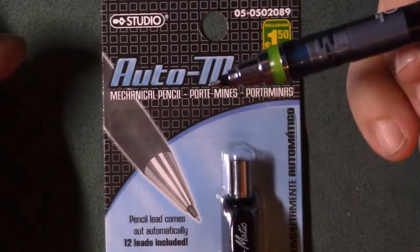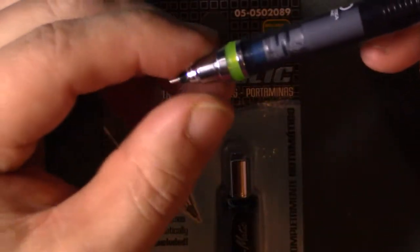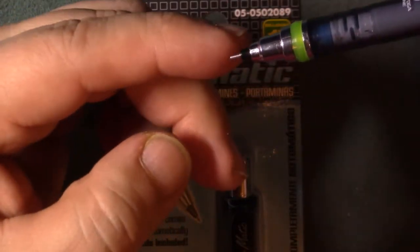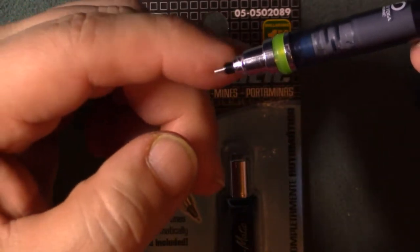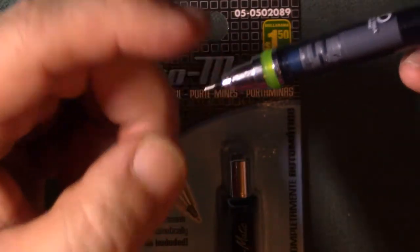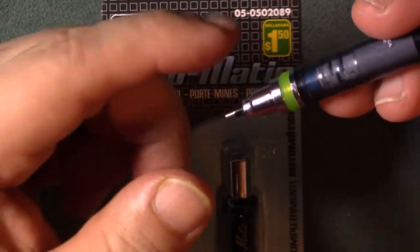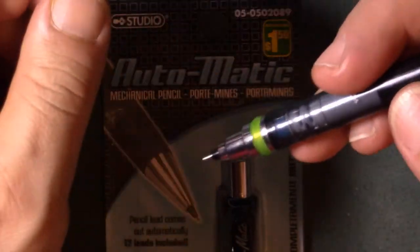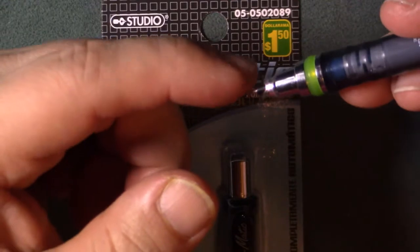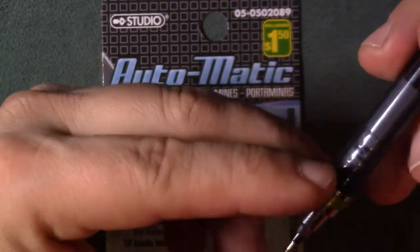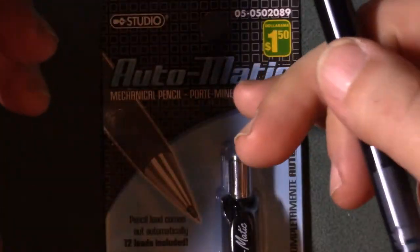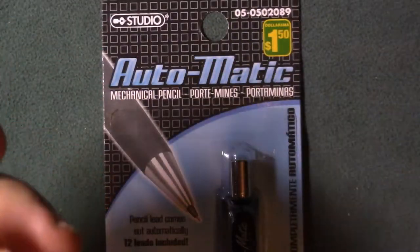This one here, as you write with it, doesn't self-feed itself, but this one actually rotates the lead as you're writing so you don't create a flat spot on your particular lead. I guess in an instance this is almost like that, but instead of rotating the lead it actually feeds it forward, I guess.